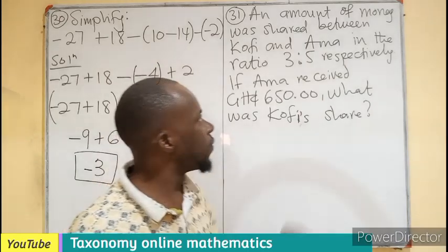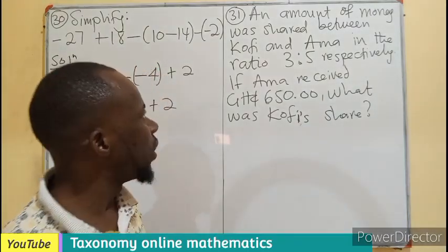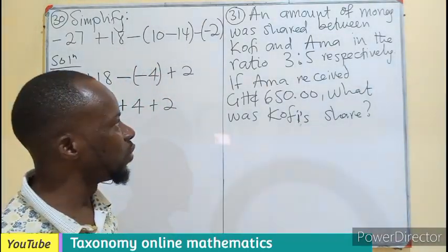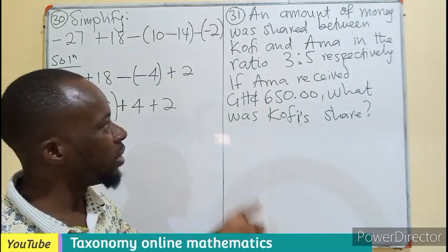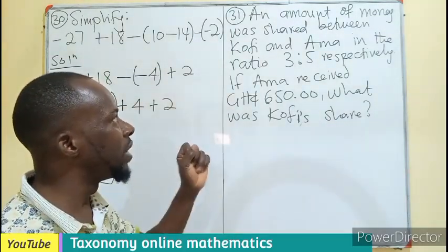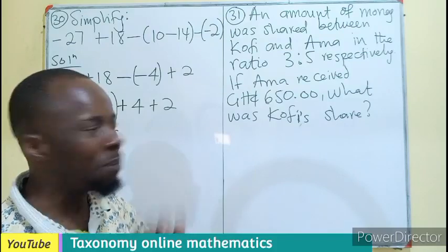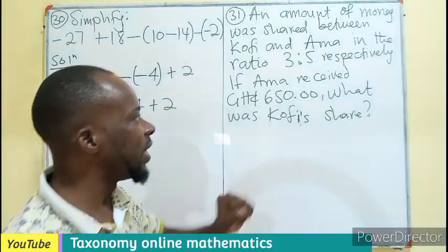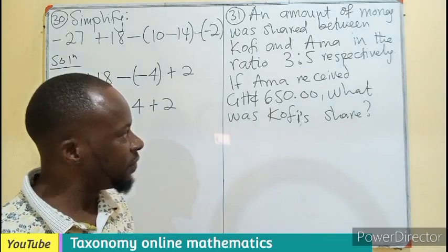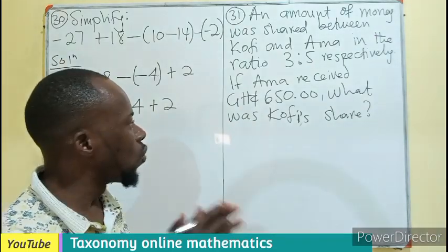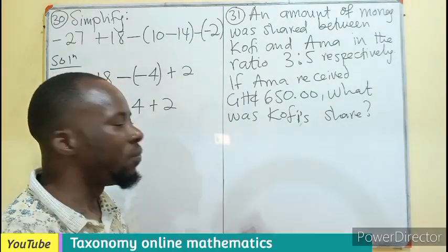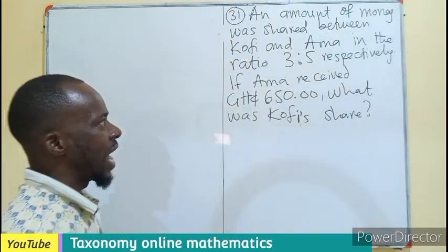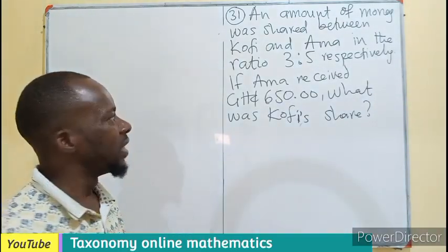An amount of money was shared between Kofi and Ama in the ratio 3 to 5 respectively. Meaning 3 parts go to Kofi and 5 parts go to Ama. So at the end of everything, Ama received 650 of the amount. So what was Kofi's share? We know that in this, we are doing this in parts.